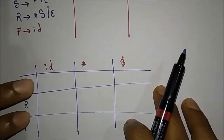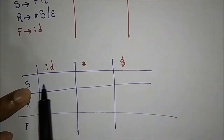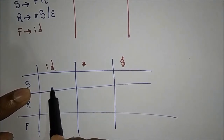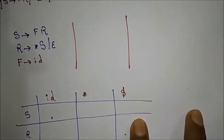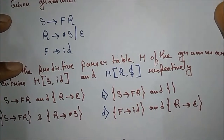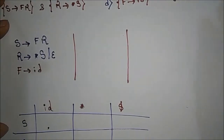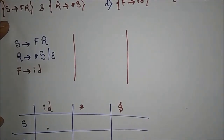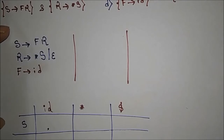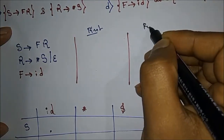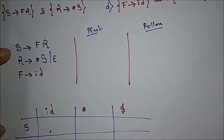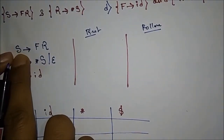To find out which production goes in the S comma ID box and the R comma dollar box, we first need to find the FIRST and FOLLOW sets for this given grammar. So let us find the FIRST and FOLLOW.